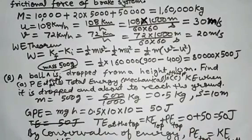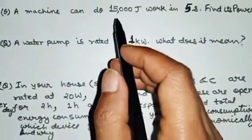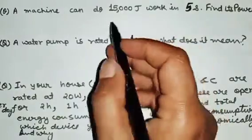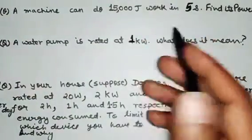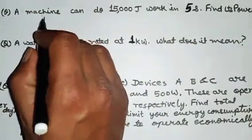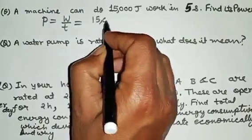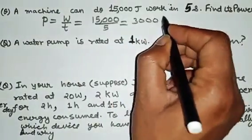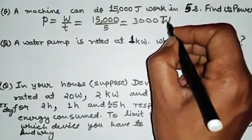For the first part we do calculation; the rest can be solved by reasoning. Next: a machine can do 15,000 Joules of work in 5 seconds — find its power. Power = work ÷ time = 15,000 ÷ 5 = 3,000 Joule per second, that is 3,000 Watt, because the unit of power is Watt.